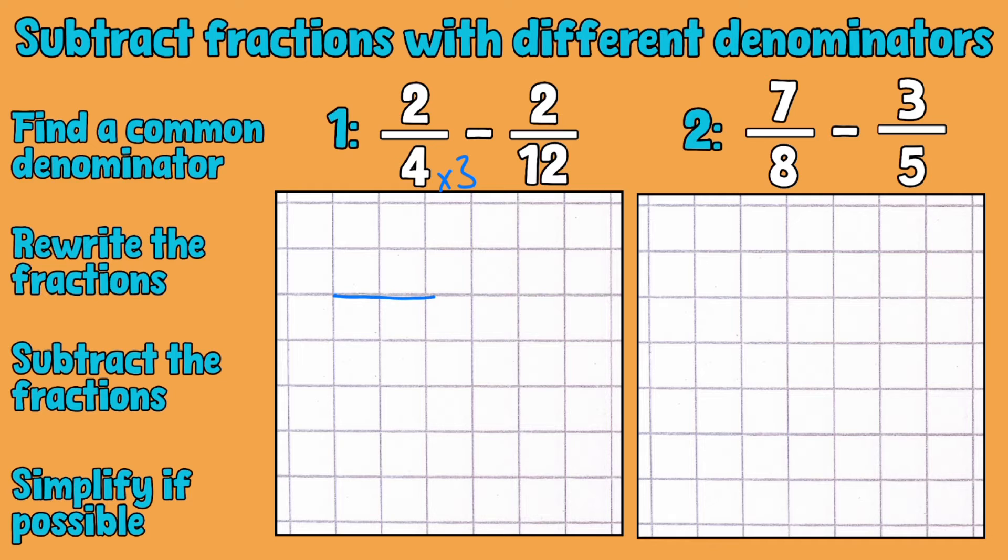Let's start rewriting them then. So on this side I've made my 4 into a 12 by multiplying it by 3. This side is already 12 so I can just write that straight in there. The important thing with this type of question is that you do the exact same thing to the numerator for that fraction as well. So we'll be multiplying the 2 that we've got there by 3 to make 6. So 6 twelfths subtract 2 twelfths leaves us with 4 twelfths and we can simplify this fraction to one third.